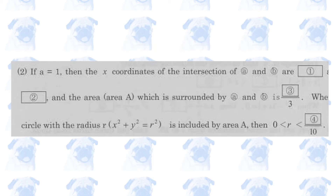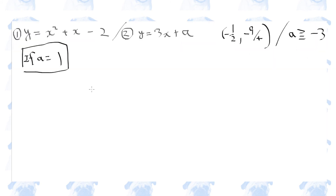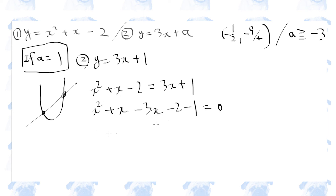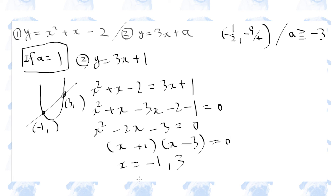Question 2 of Section 2. We assume a equals 1 and need to find the x-coordinates of the points of intersection of the two graphs. Setting the two equations equal to each other and solving for x, the x-coordinates of the points of intersection are minus 1 and 3.